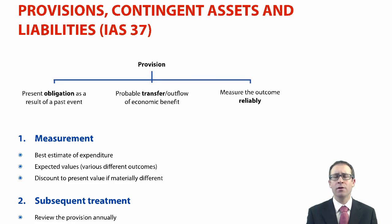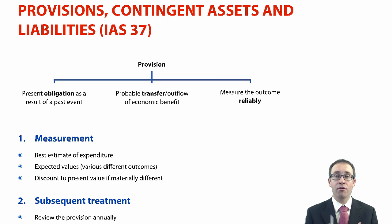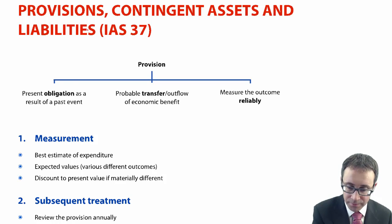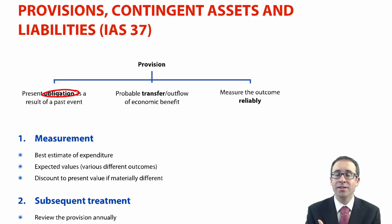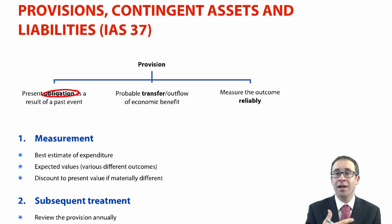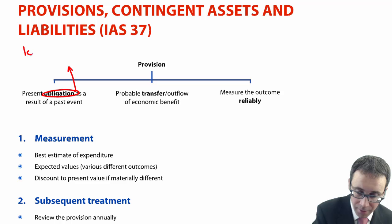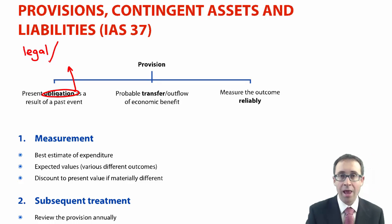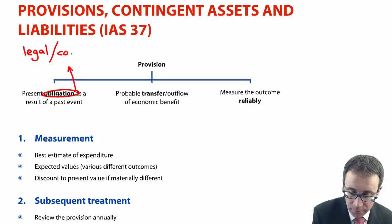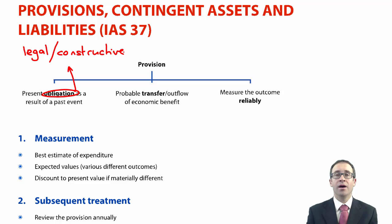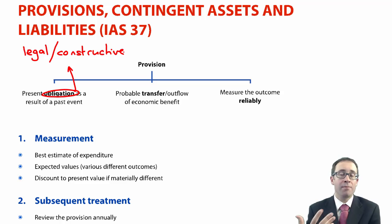It's a great standard to apply within P2 because there's plenty to go through and discuss within the world of provisions. In order to create a provision — remember you're going to credit your provision and debit your statement of profit or loss — you need a present obligation. Tying back to the definition of a liability from the framework: a present obligation as a result of a past event that gives an outflow of economic benefit. IAS 37 takes that further by stating that the obligation is created either through legislature — a legal obligation — or also a constructive obligation, which is an established pattern of past practice or whereby you have created the obligation through public communication, maybe via your website.